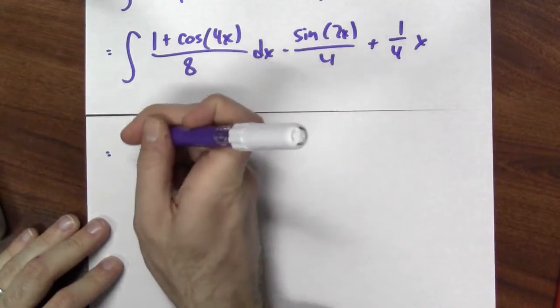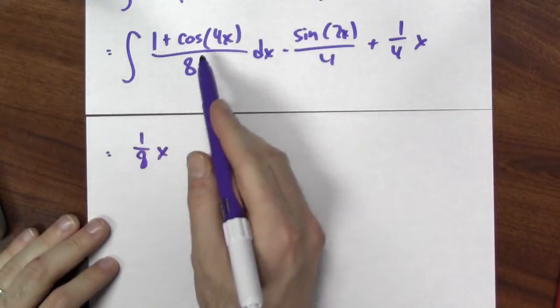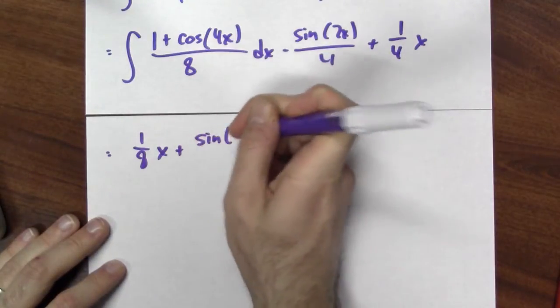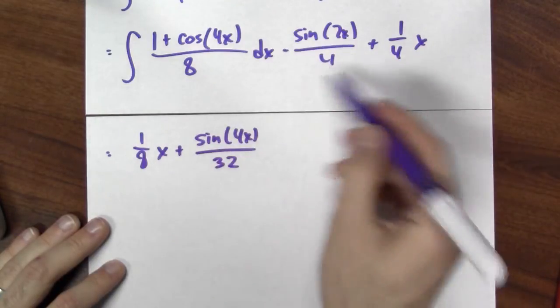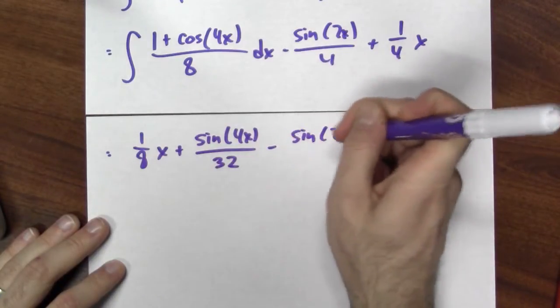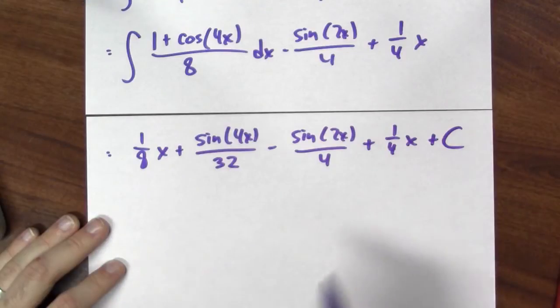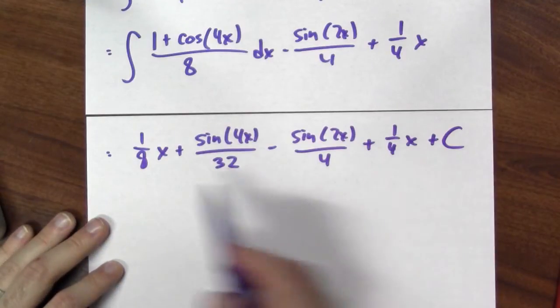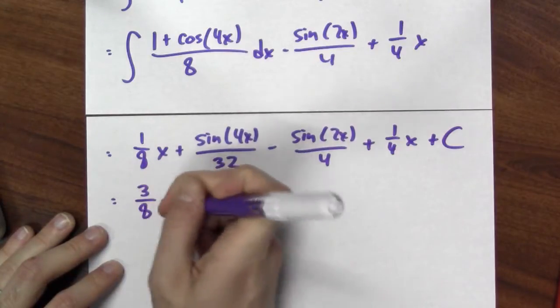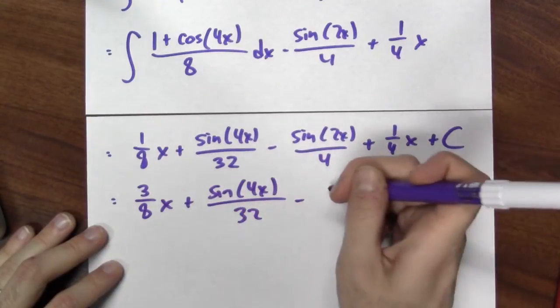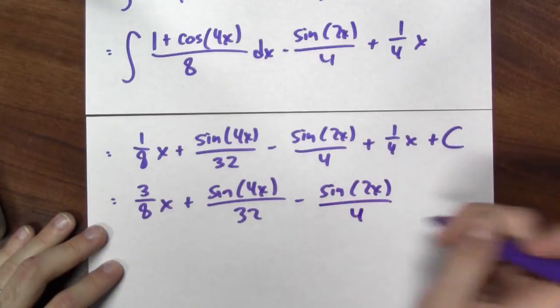So I want to anti-differentiate 1 eighth, and I get 1 eighth x. And then I want to anti-differentiate cosine 4x over 8, and I get sine of 4x over 32. And then I'll include the rest. So I'll subtract sine of 2x over 4, I'll add a quarter x, and I'll add some constant. And I could combine the 1 quarter x and the 1 eighth x. So I could write this as 3 eighths x plus sine of 4x over 32 minus sine of 2x over 4 plus c.